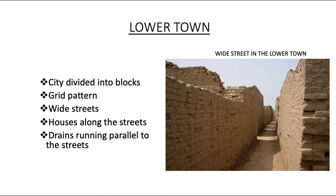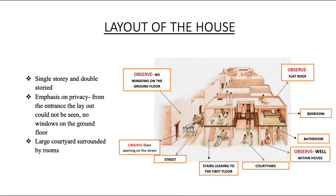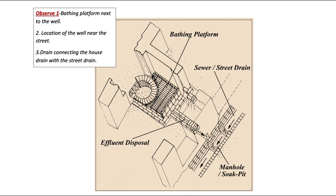The domestic architecture shows a courtyard at the center where activities such as cooking and weaving were carried out, with rooms on all sides. There was an apparent concern for privacy — no windows on the ground level, and the main entrance does not give a direct view of the courtyard. Each house had its own bathroom paved with bricks. Drains connected through the wall to the street drains. Remains of staircases suggest some houses were double-storied, and many houses had wells.